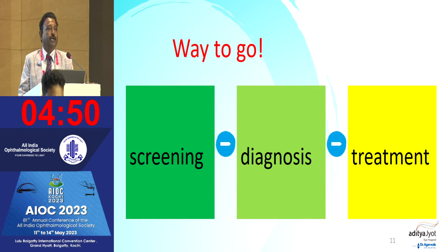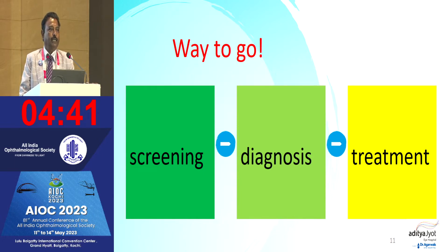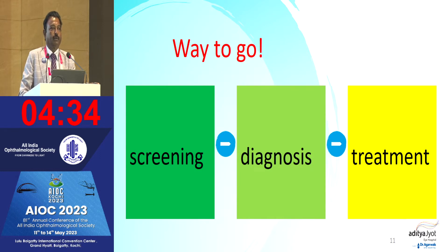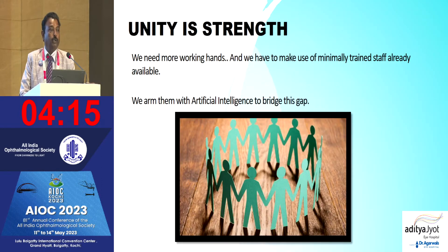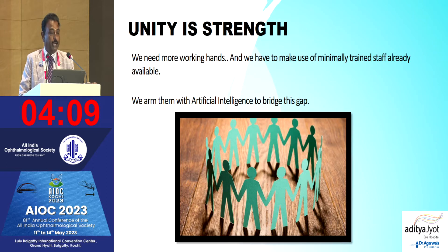In the SMART India study with Dr. Shobha Prasad, Dr. Rajiv Raman, Dr. Kim, and 20 centers in India, we found vision-threatening diabetic retinopathy where patients are not willing to come for treatment. They have 6/6 vision with advanced proliferative diabetic retinopathy without macular edema and need laser or injection, but are afraid that treatment will cause them to lose the eye. We need more working hands and must make use of minimally trained staff, arming them with AI to bridge this gap.